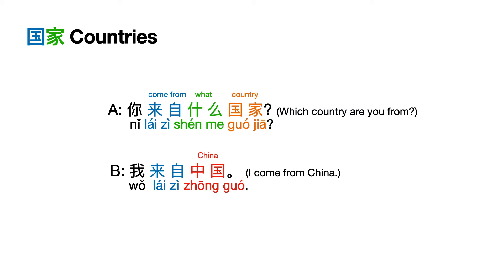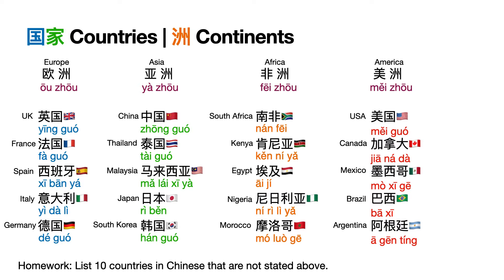国家 means 'country'. 你来自什么国家? — Which country are you from? You can reply by saying 我来自 and your country. For example, 我来自中国 — I come from China. I have given some examples of regions and countries here. For example, Europe — 欧洲 — 我来自欧洲 — I come from Europe. The same for 亚洲 (Asia), 非洲 (Africa), and 美洲 (the Americas).